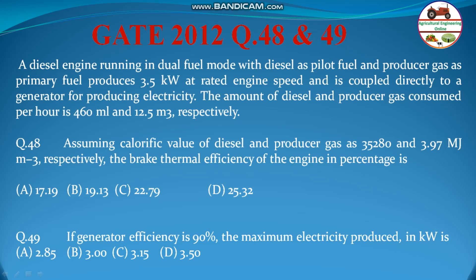The question says a diesel engine running in dual fuel mode with diesel as pilot fuel and producer gas as primary fuel produces 3.5 kilowatt at rated engine speed and is coupled directly to a generator for producing electricity. The amount of diesel and producer gas consumed per hour is 460 ml and 12.5 m³ respectively.